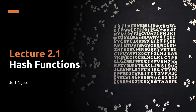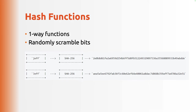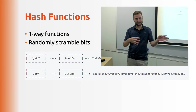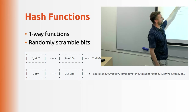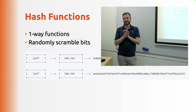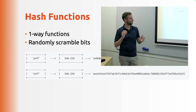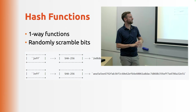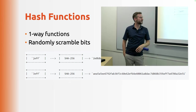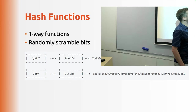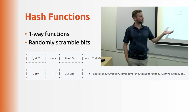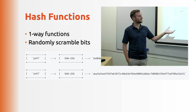So the first chapter is going to be about hash functions. What is a hash function? Well, it's a one-way function — you can create a hash, but you cannot undo it; you cannot go backwards. The hash function is going to randomly scramble the bits. We take the string 'Jeff', run it through SHA-256, and the function outputs a long fixed-length string. No matter what you input, you get the same length of output, and the characters should appear random.